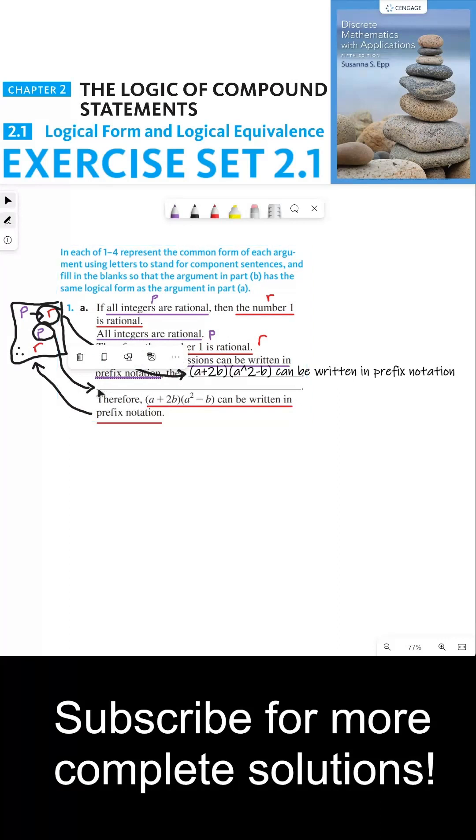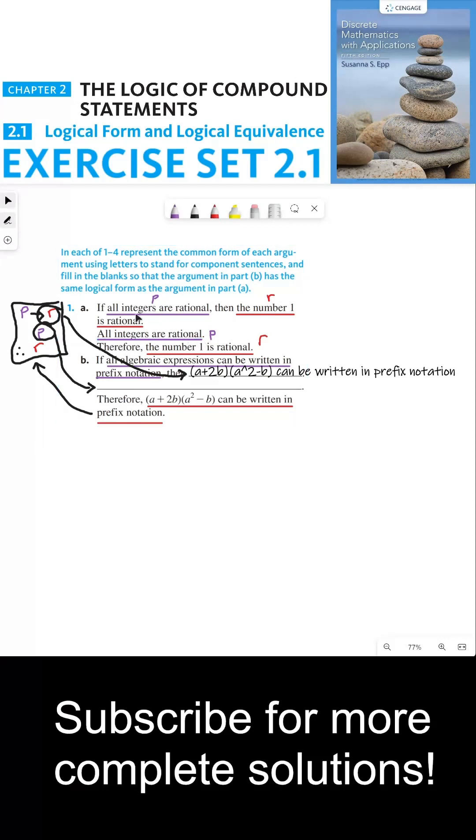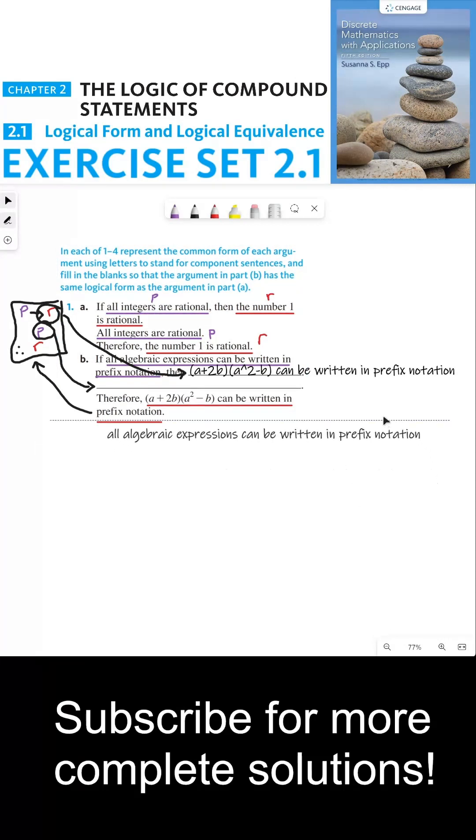We have one more blank down here. It kind of looks like this is the same blank, but this is actually a different blank because we're missing P here, which corresponds to the hypothesis of the if statement. I could put that statement right here, and that's how you solve this problem. Anyways, thanks everyone, and I'll see you in the next video.